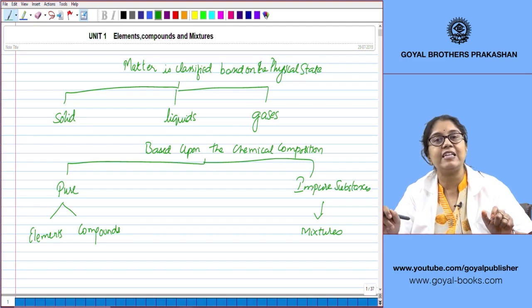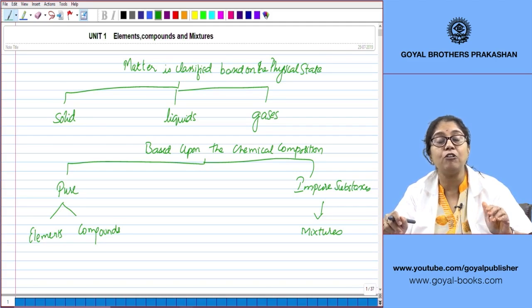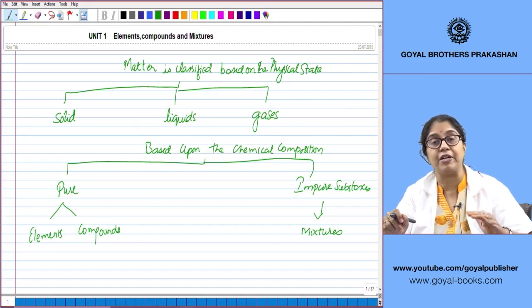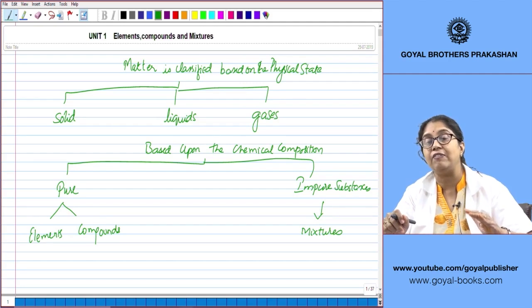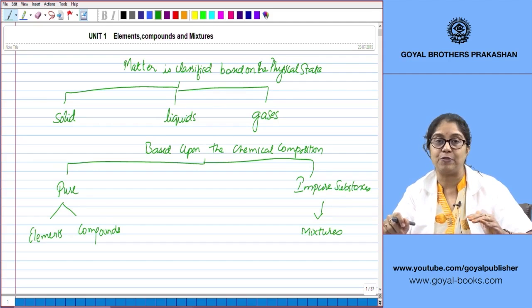Let us take the example of oxygen and carbon dioxide. Both are colorless gases but still they differ so much in their properties. Oxygen is required for respiration. We cannot imagine life without oxygen and in fact oxygen also supports burning. But carbon dioxide on the other hand does not support burning and it is not required for respiration. In fact it is the product of respiration.